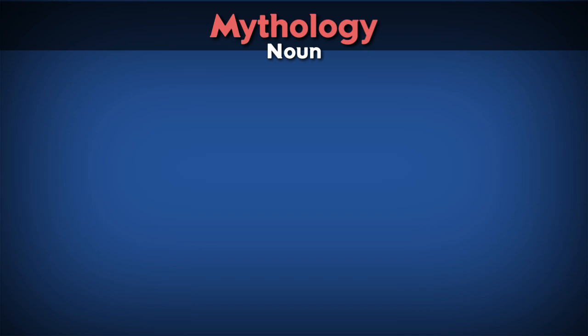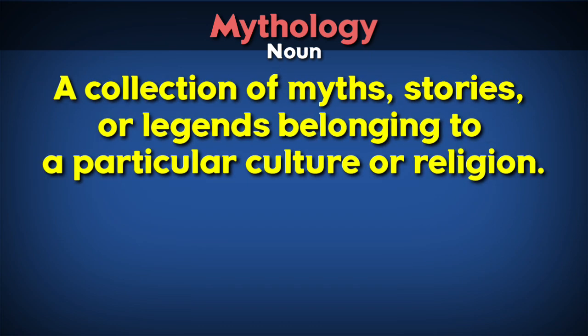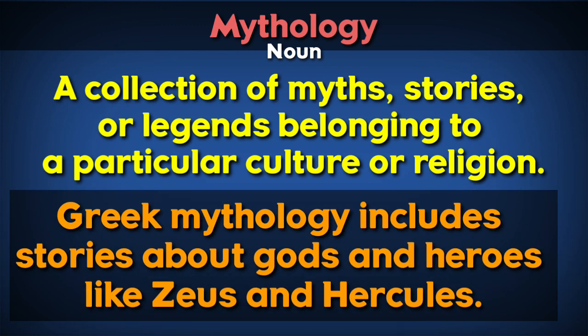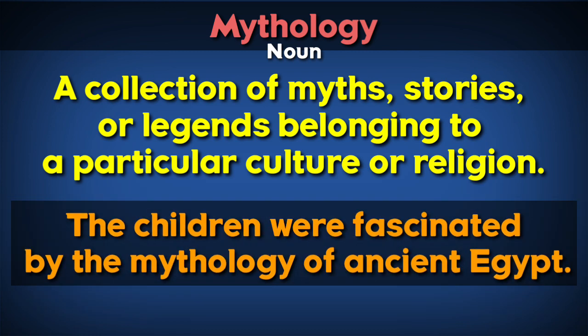Mythology. Mythology can be used as a noun and it means a collection of myths, stories or legends belonging to a particular culture or religion. For example, Greek mythology includes stories about gods and heroes like Zeus and Hercules. The children were fascinated by the mythology of ancient Egypt.